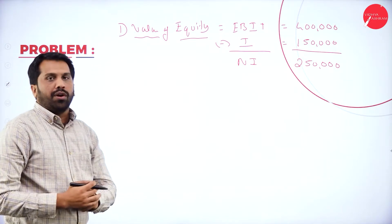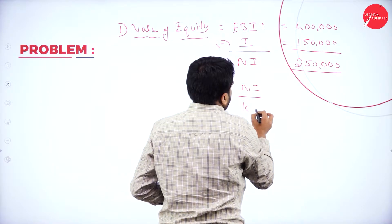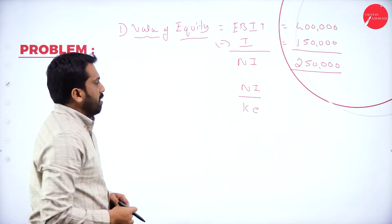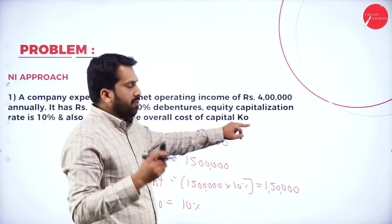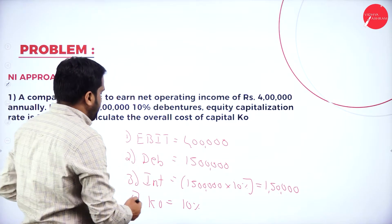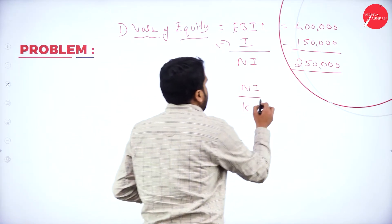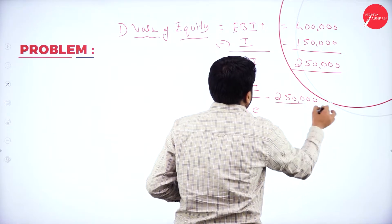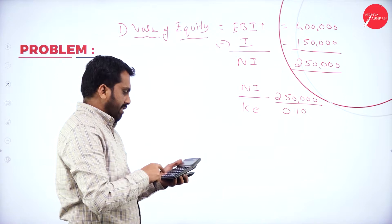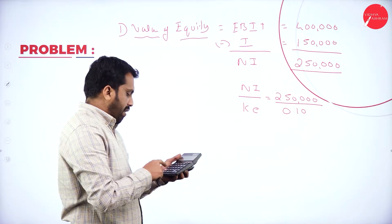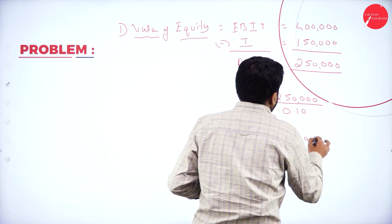How to find out value of equity? Simple — NI divided by cost of equity. Now, note that the equity capitalization rate of 10% is KE, not KO. So NI is 2 lakh 50,000 divided by 0.10. I get around 25 lakh. So the value of equity is 25 lakh.